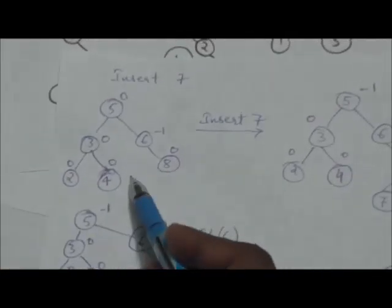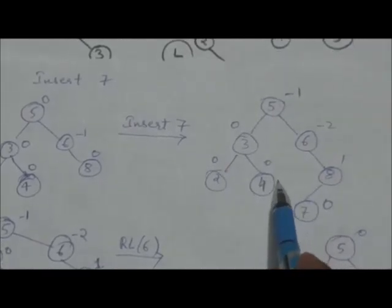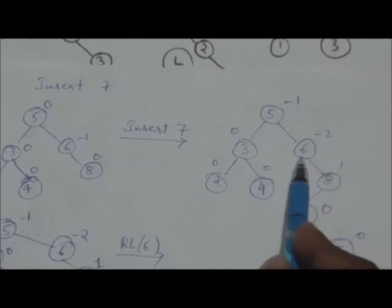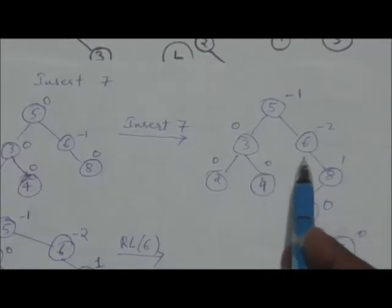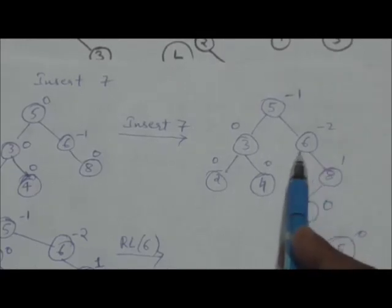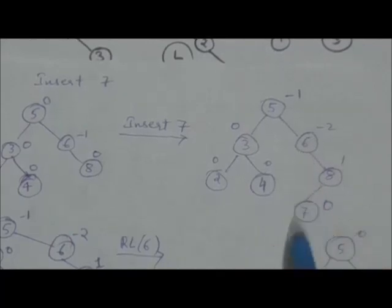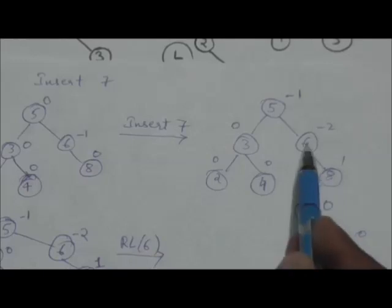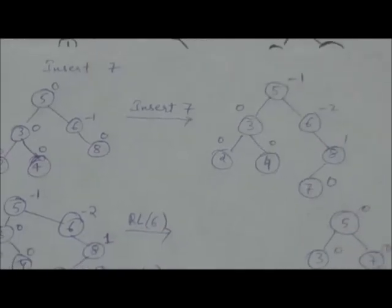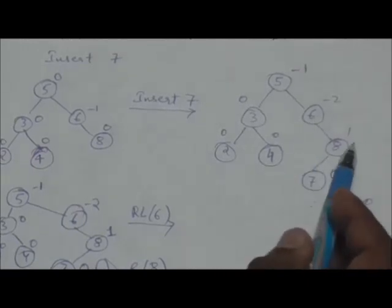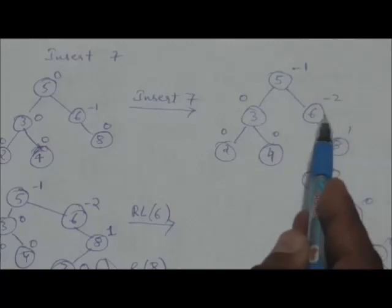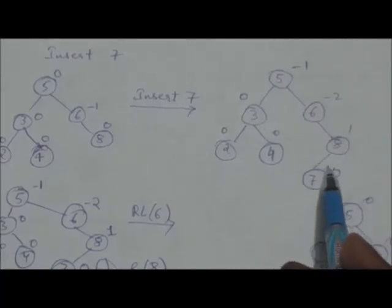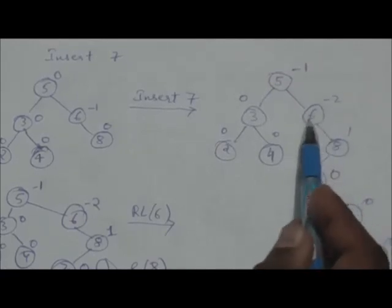Now we insert key 7. After inserting 7, this tree is unbalanced — this node has a balance factor of minus 2. We rotate the tree rooted at the unbalanced node closest to the newly inserted leaf, which is the subtree rooted at node 6. Key 7 is inserted into the left subtree of the right child of node 6.